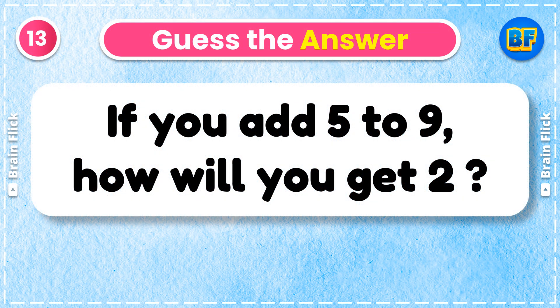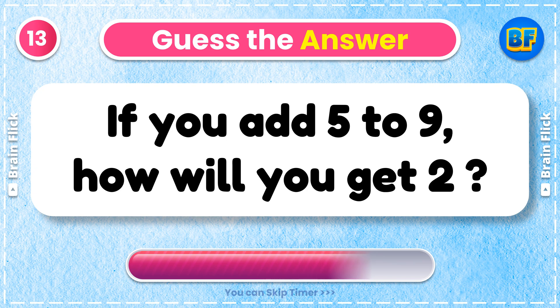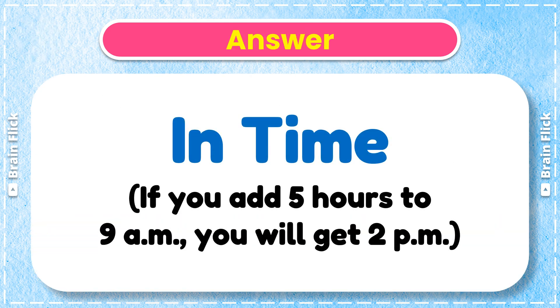Riddle 13. If you add 5 to 9, how will you get 2? Answer: If you add 5 hours to 9 a.m., you will get 2 p.m.